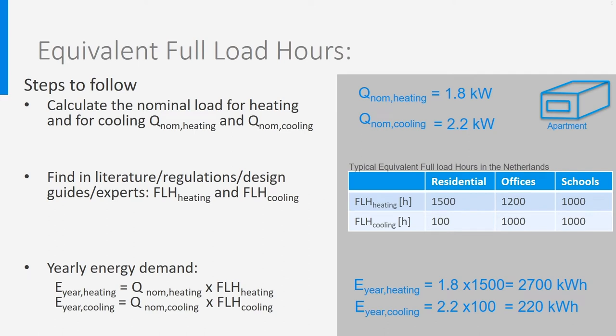Let's study further how it works in practice. There are three steps — on the left the steps, on the right the example. As an example, we take again the small apartment we studied in former lectures. The first step is to calculate the nominal powers for space heating and space cooling. From the former lecture, we found for this apartment a nominal heating power of 1.8 kilowatt, and for the cooling it was 2.2 kilowatt.